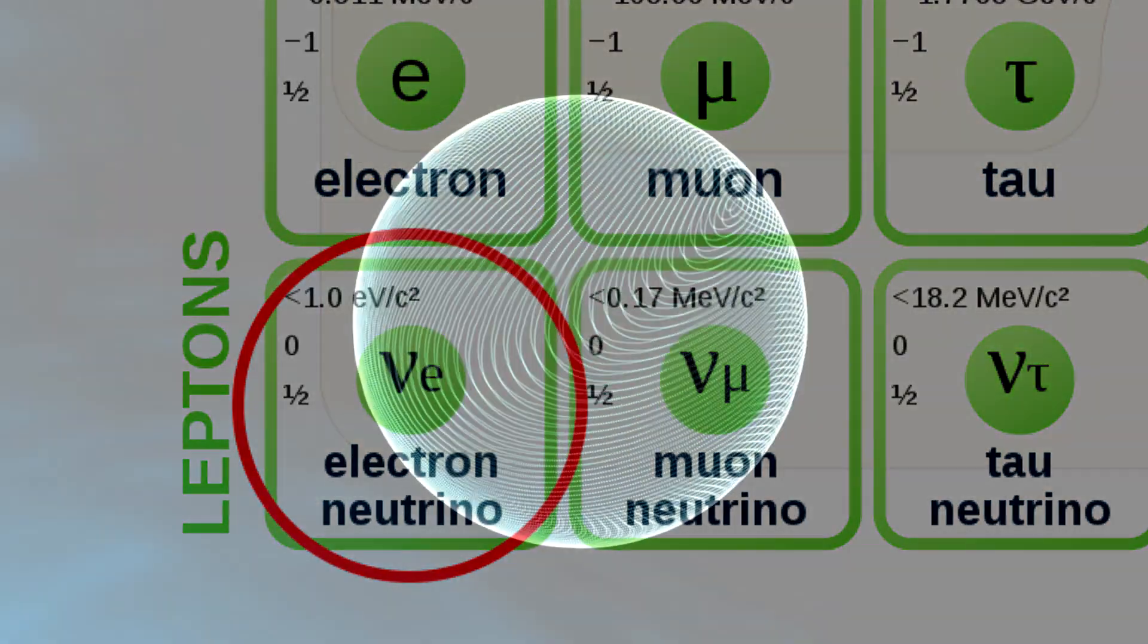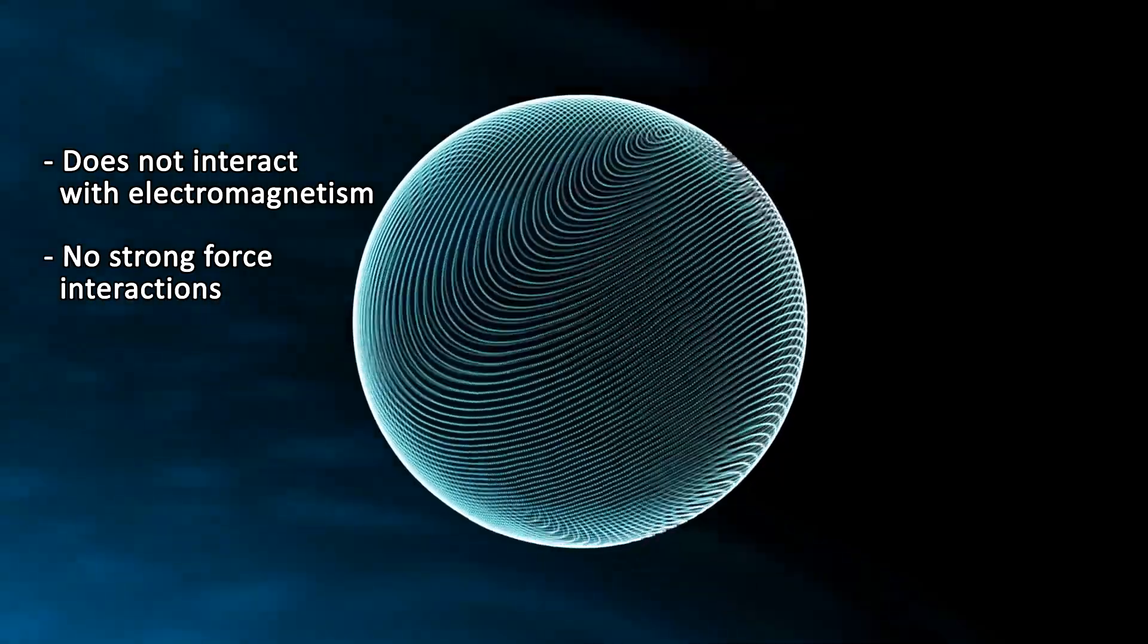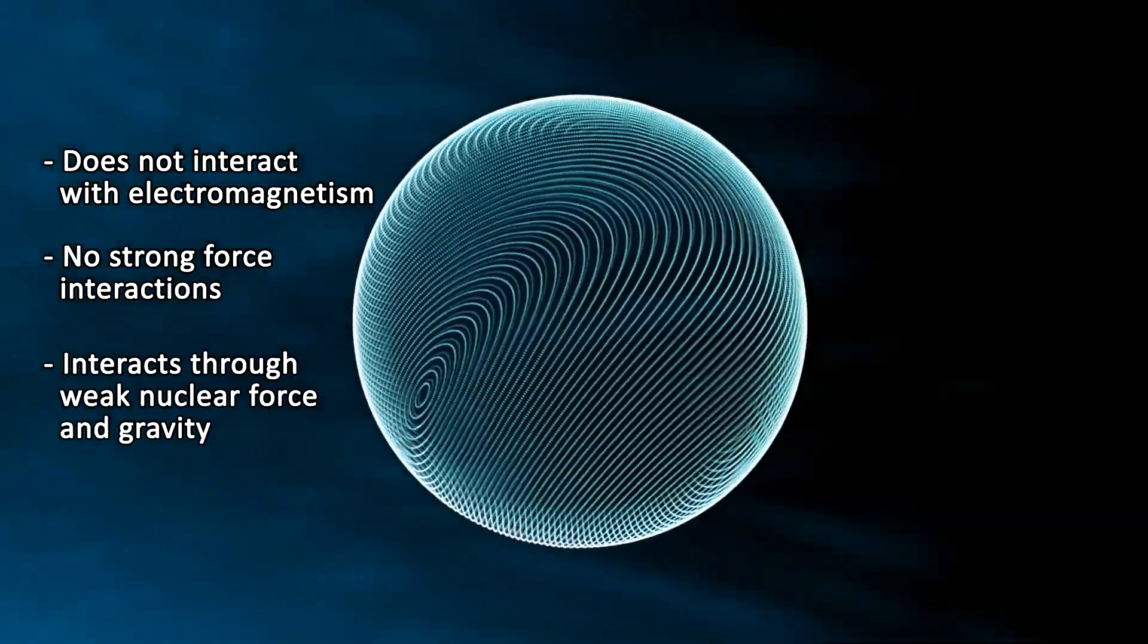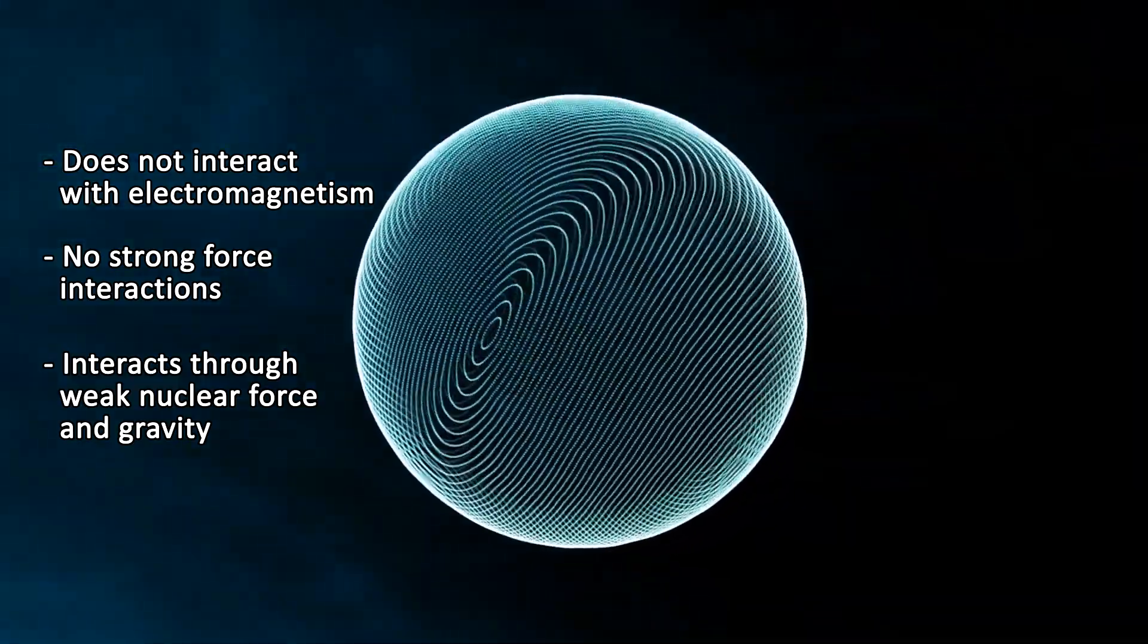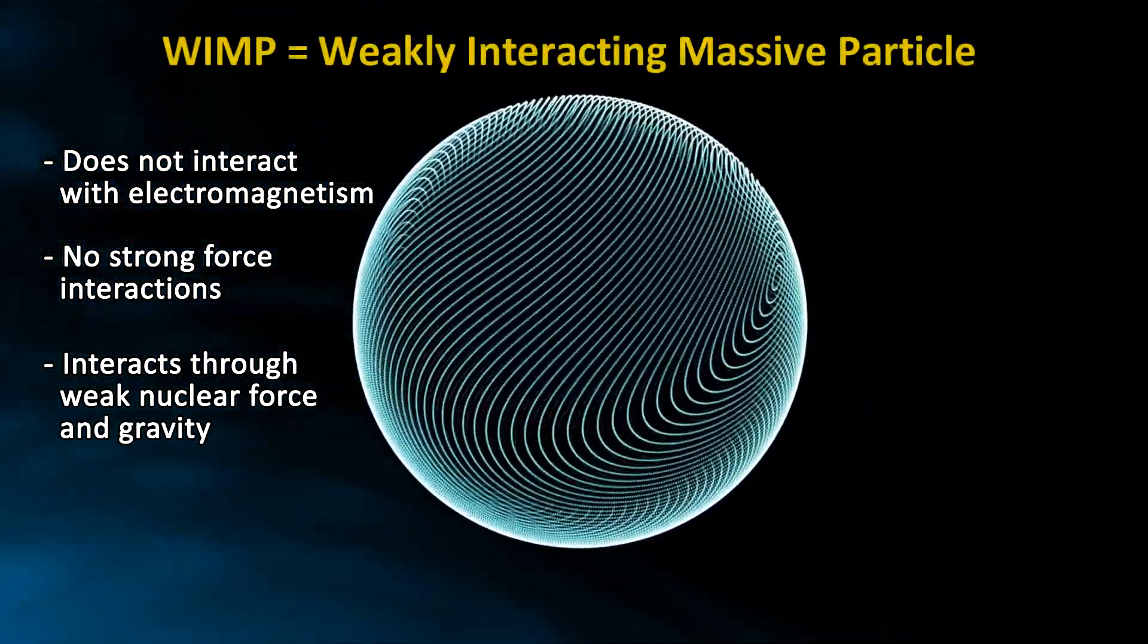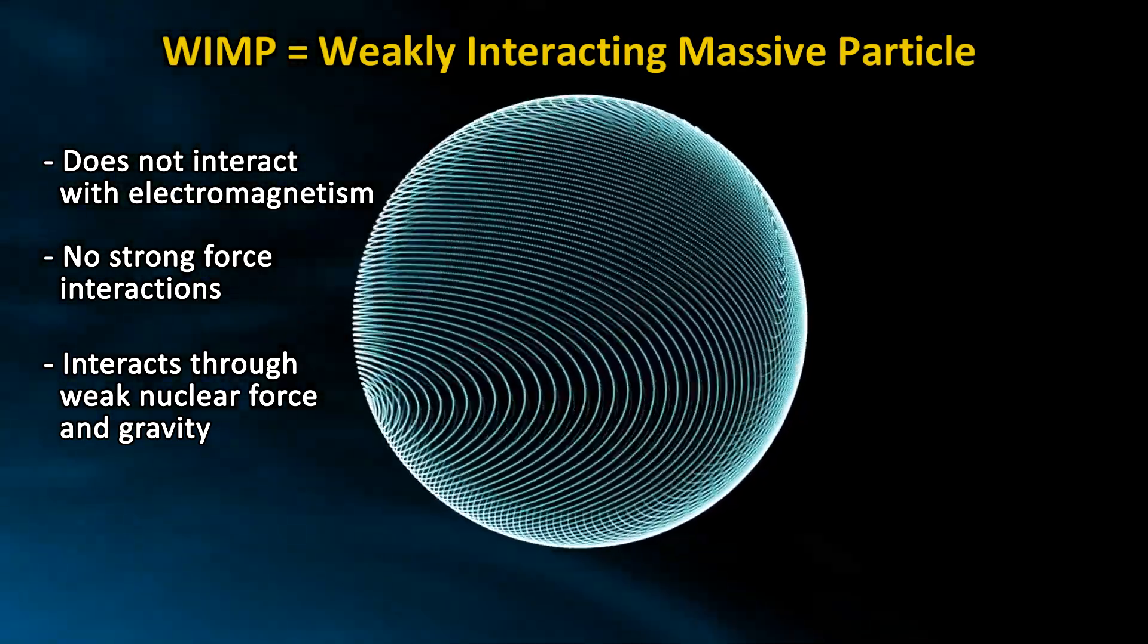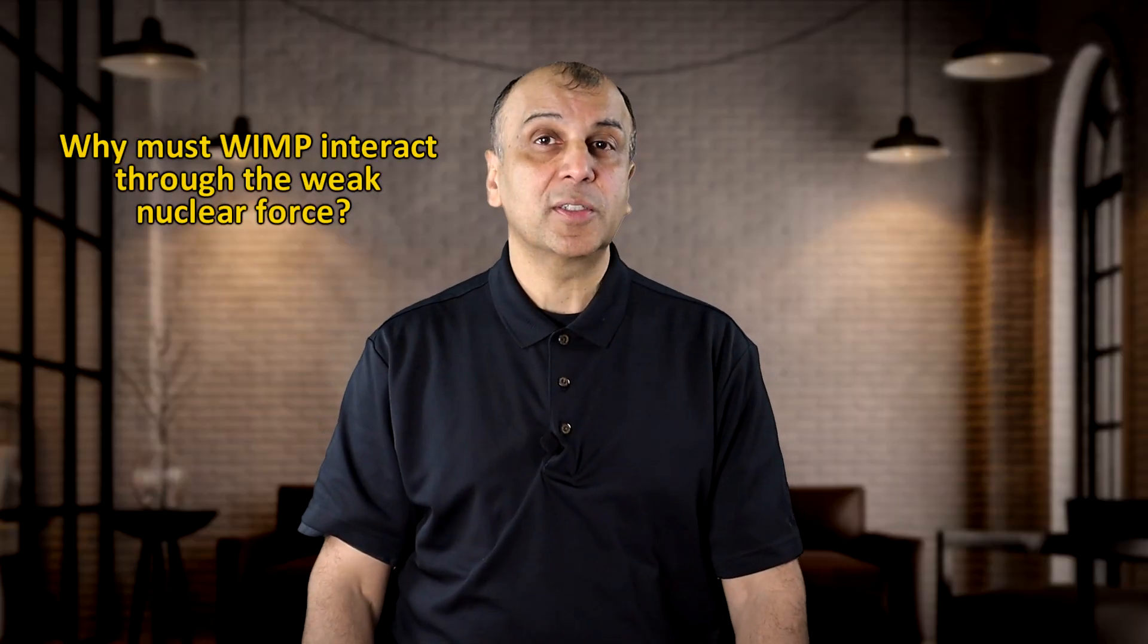If we invent a new particle that does not interact with electromagnetism, has no strong force nuclear interactions, but does interact through the weak nuclear force and through gravity, then we have just invented the dark matter particle. Scientists have a name for this particle. It's WIMP, or weakly interacting massive particle.